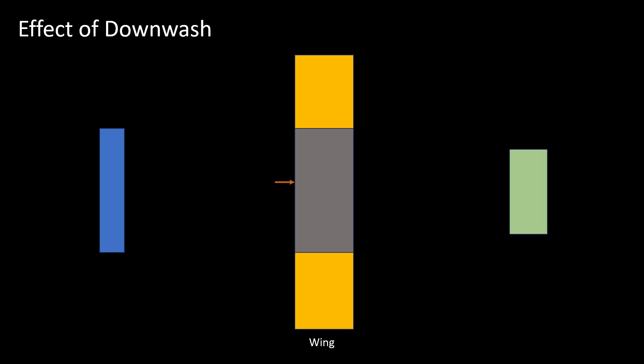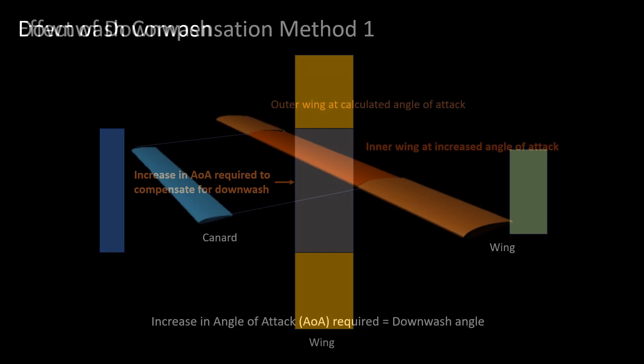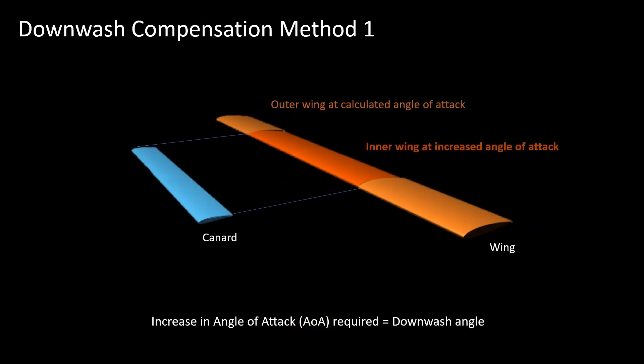The reduced angle of attack on the main wing due to canard downwash can be compensated by increasing the angle of attack in the span of wing affected by the downwash. The increase in angle of attack required will be equal to the downwash angle produced by the canard. The part of the wing that's out of the downwash can be left at the original calculated angle of attack.